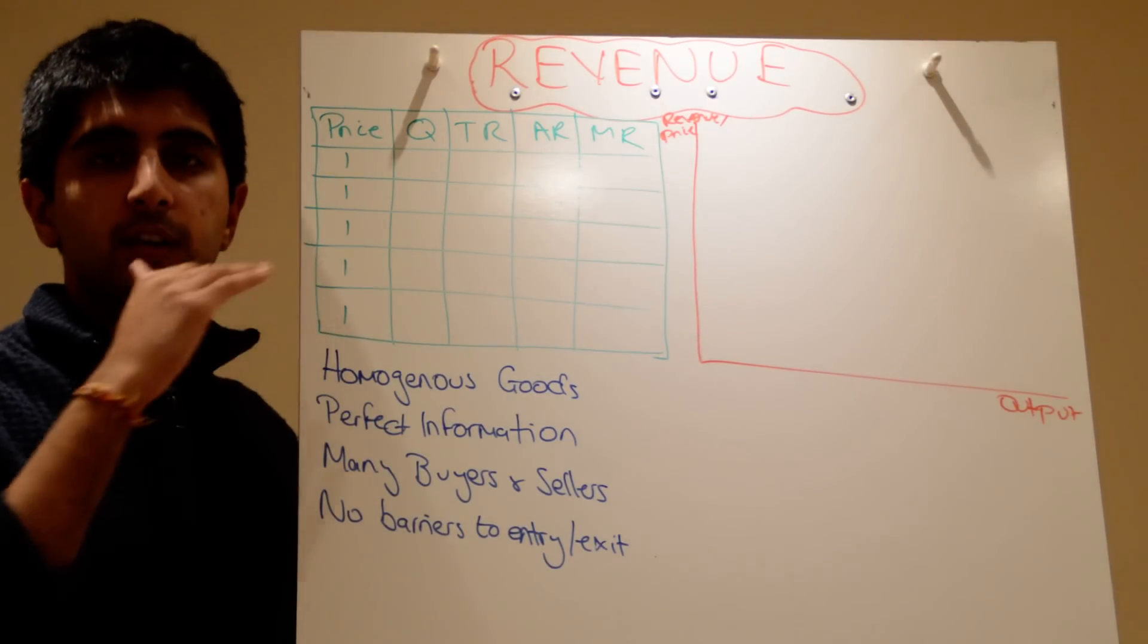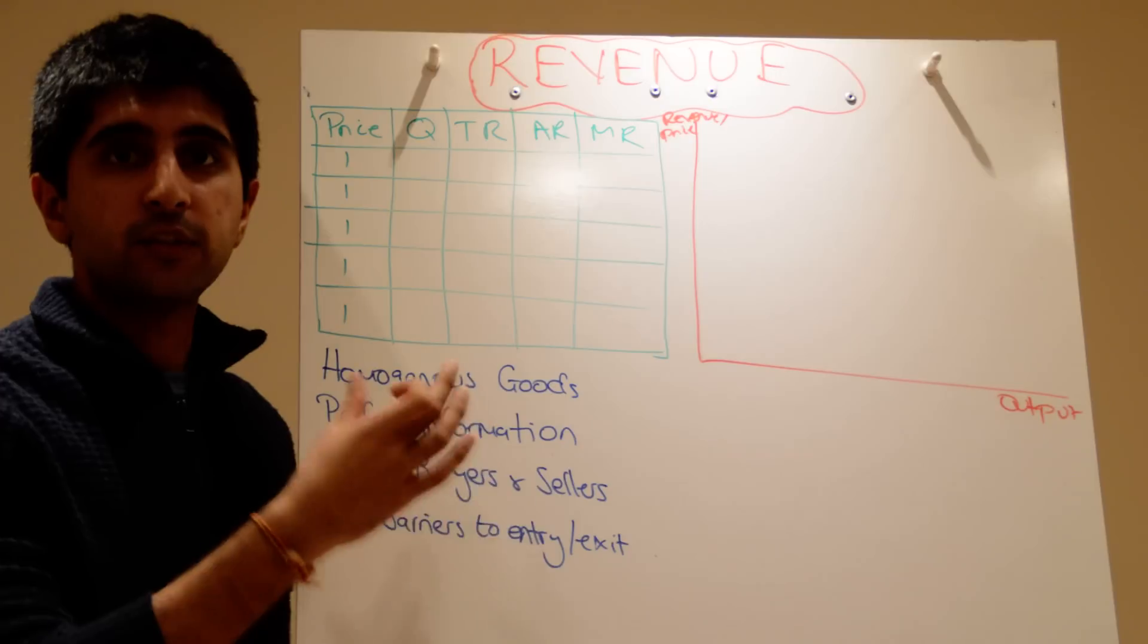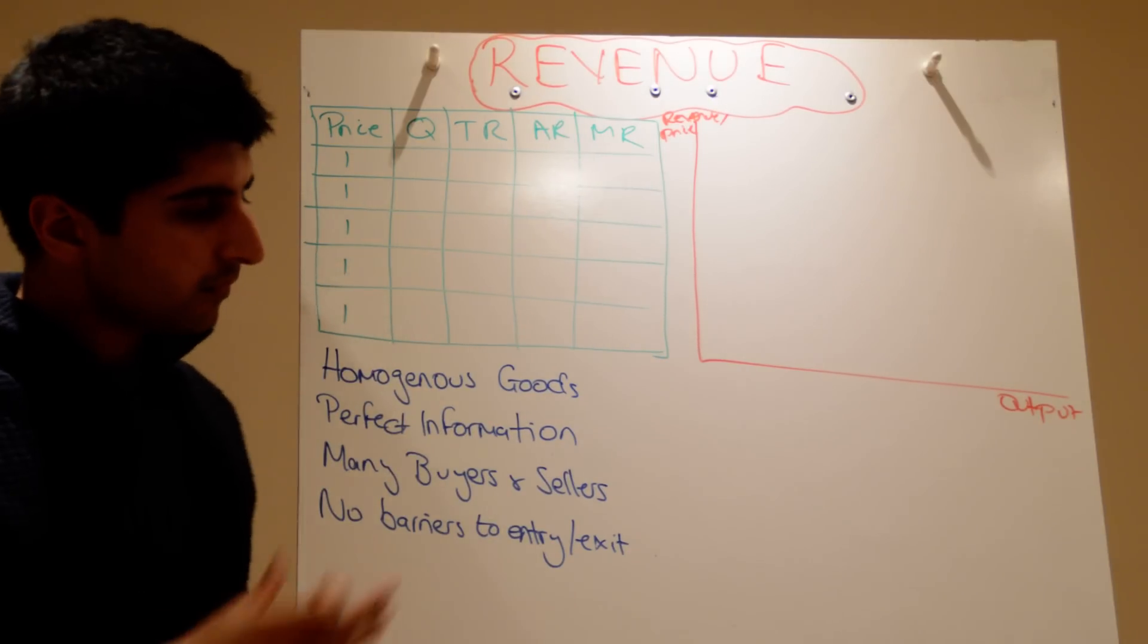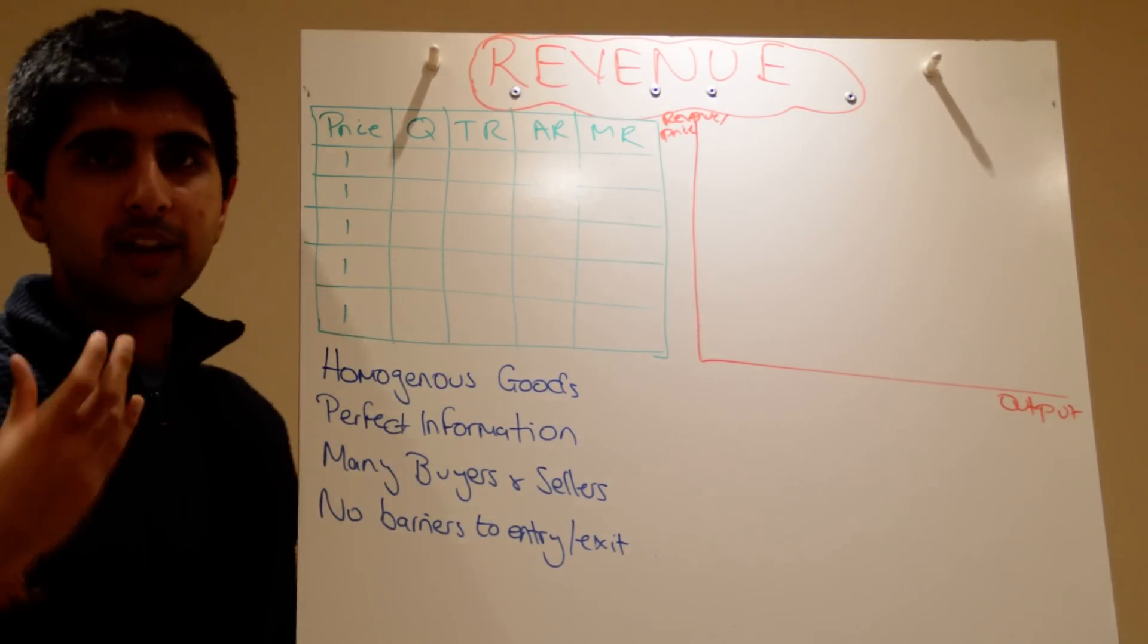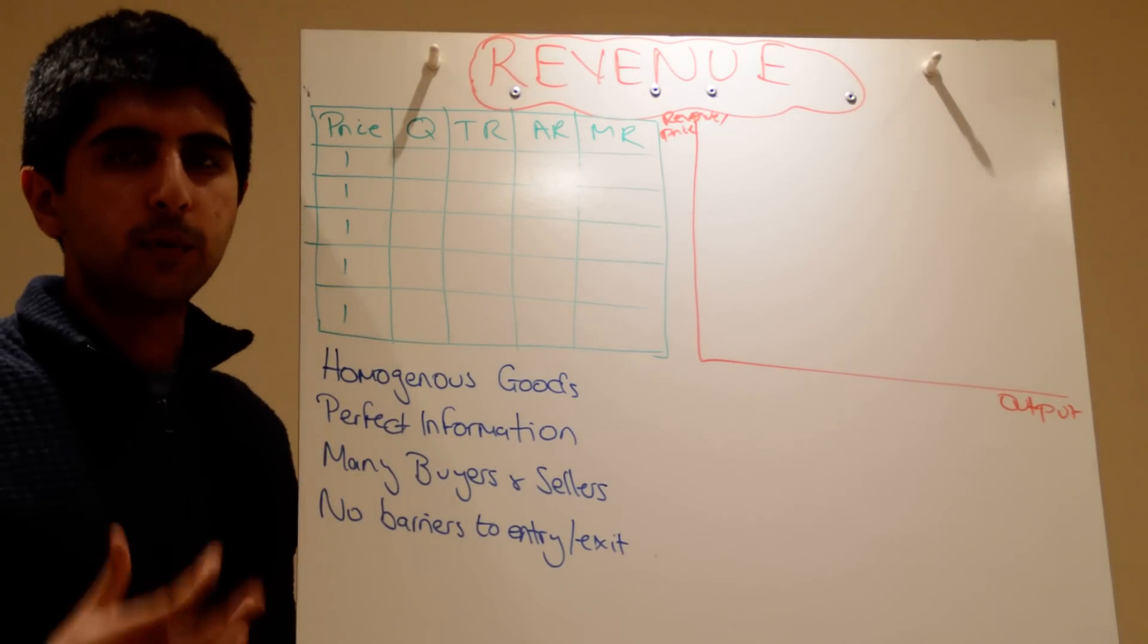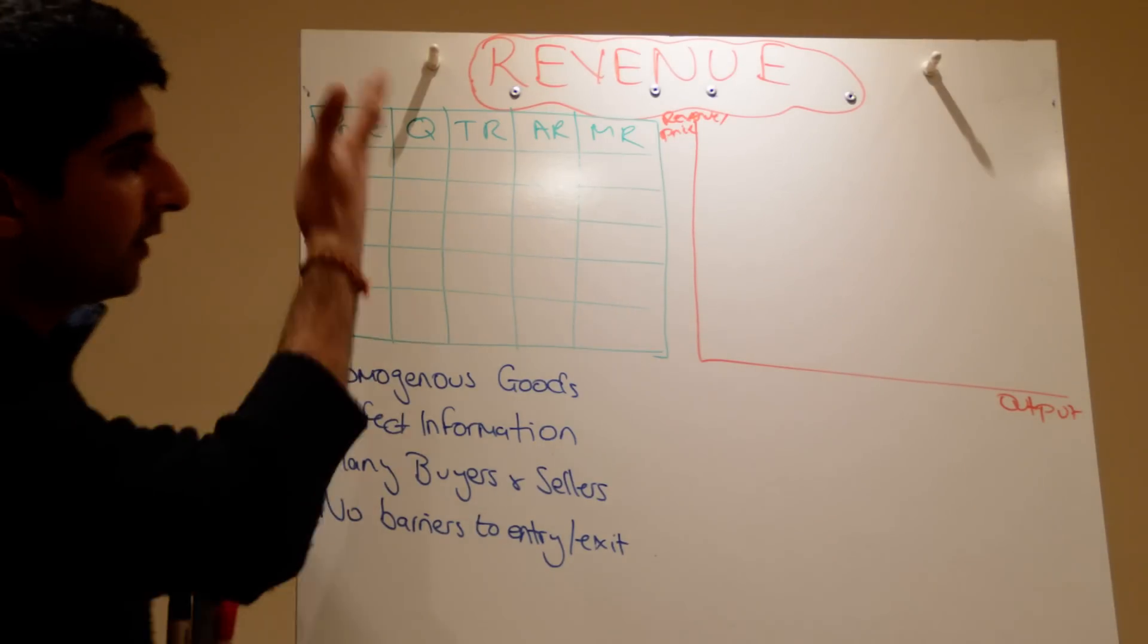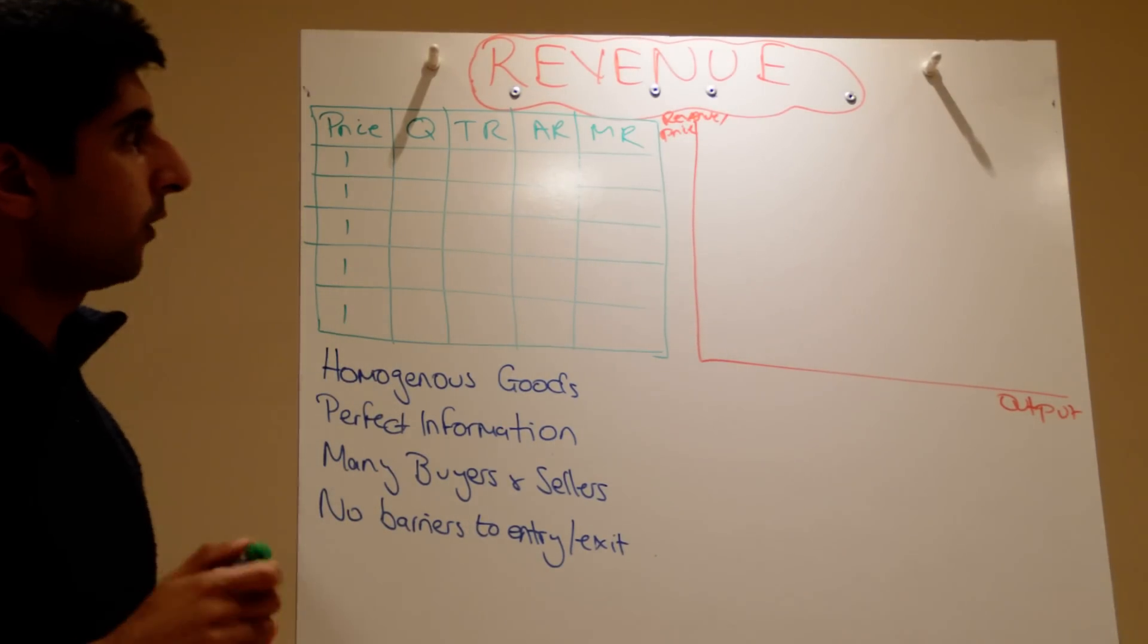Similarly if the firm decides to reduce its price maybe to 50 pence, again it doesn't make any sense. It's perfect information so sellers will follow them. And then this firm will just sell exactly the same amount as it did previously but at lower prices which will then lower revenues. It doesn't make any sense to do that either. Therefore it sticks to one price and that's it. No change to that price whatsoever.